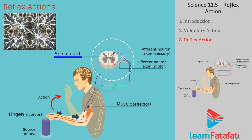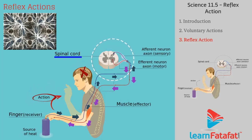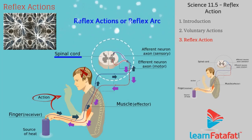Thus, when we touch a hot object, the nerves that detect pain send a signal to the spinal cord, from where the signal is transmitted to the nerves that move the muscle, causing a quick action. This action is very sudden and does not need thinking by the mind. Such actions are called reflex actions or reflex arc.